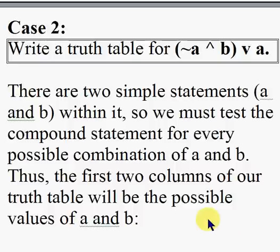Alright class, let's look at Case 2, our second example. Write a truth table for (~a ^ b) v a. Another way to read this is the quantity not-a and b, or a.